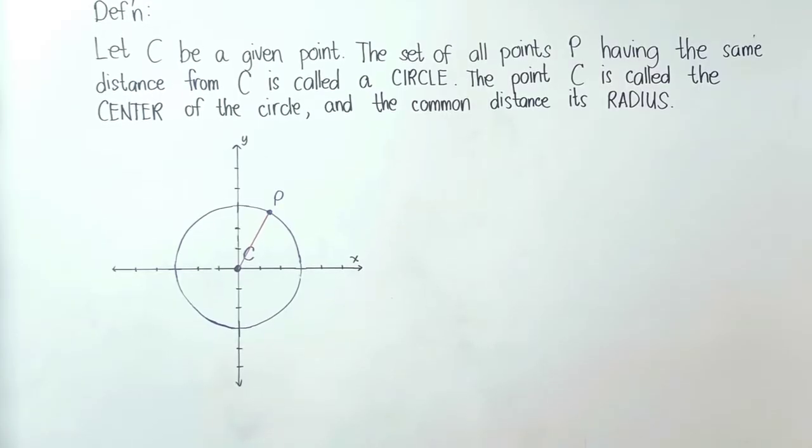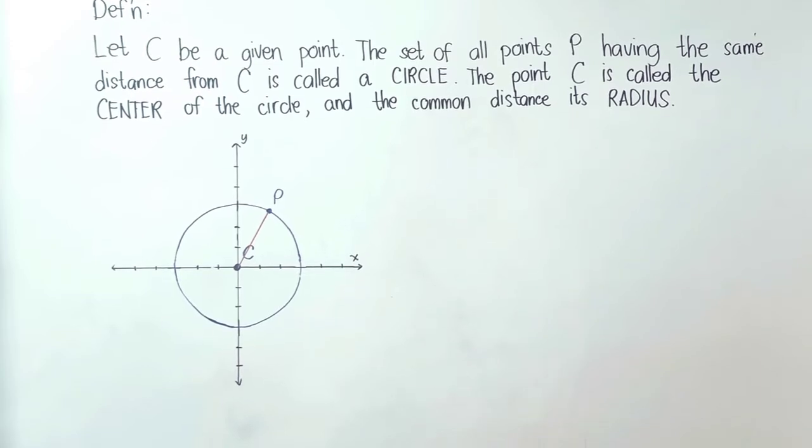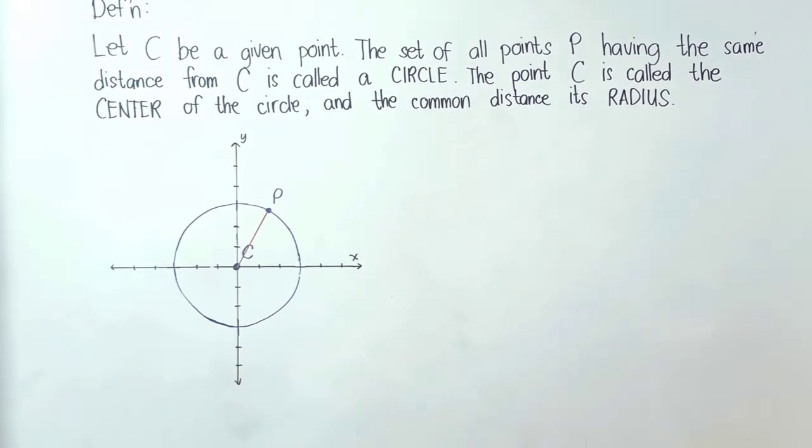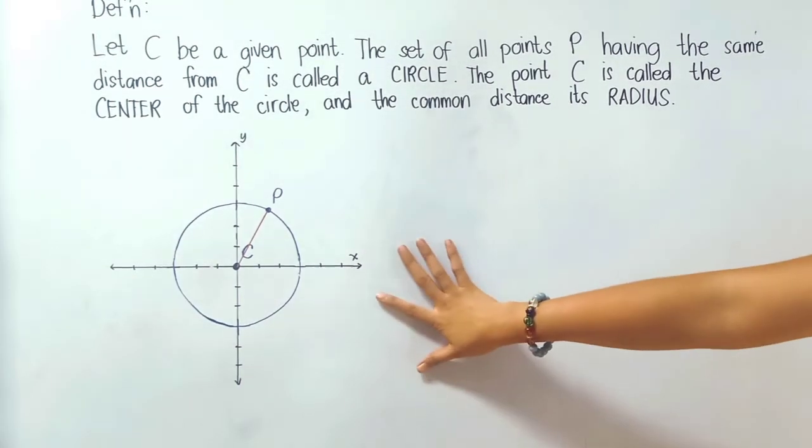Definition: Let C be a given point. The set of all points P having the same distance from C is called a circle. The point C is called the center of the circle and the common distance, its radius. As you can see, we have a sample circle here with the center C and the point of a circle called P.